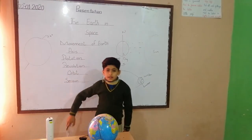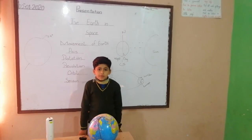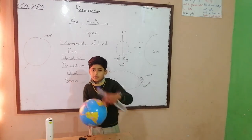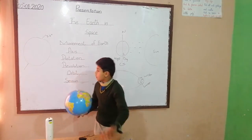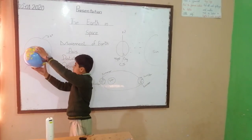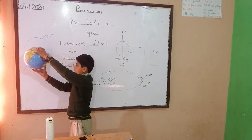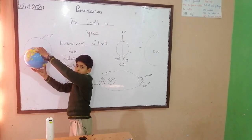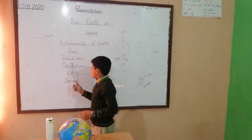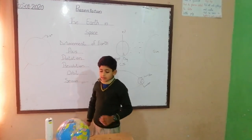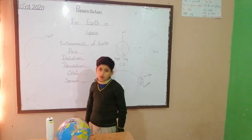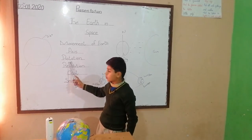Axis. The imaginary line on which the Earth spins is called the Axis. Our Earth spins on its axis in an anti-clockwise direction. This movement is called Rotation.